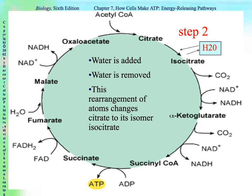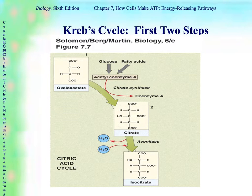Step number two is going to change citrate to its isomer isocitrate by adding water and removing water — it's just the rearrangement of atoms. For those who like the chemistry: oxaloacetate plus acetyl coenzyme A, coenzyme A leaves, there's your enzyme, we get citrate, and then citrate has water added and removed to make its isomer isocitrate.